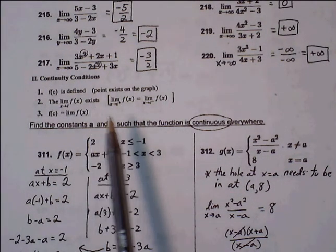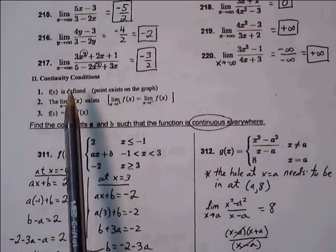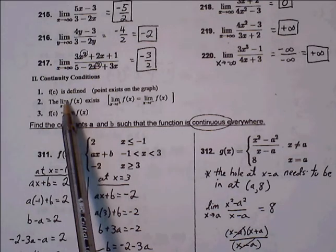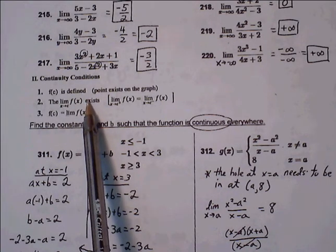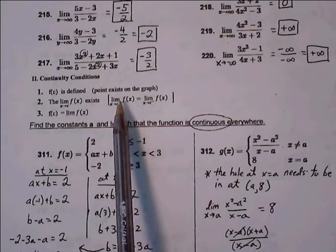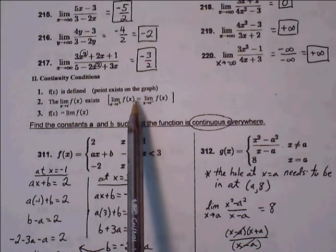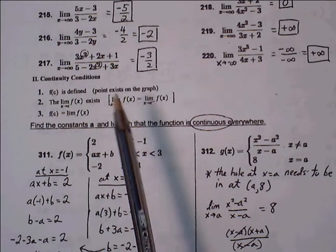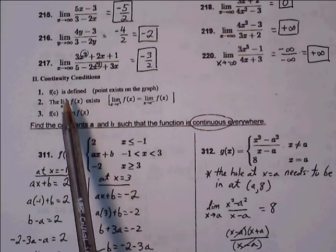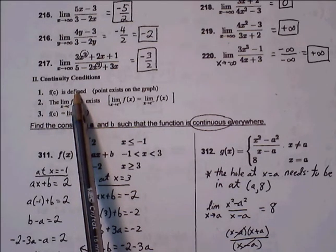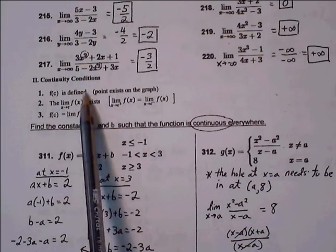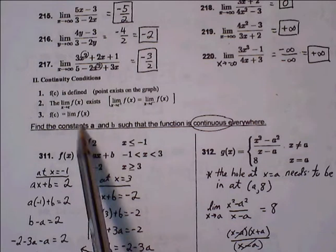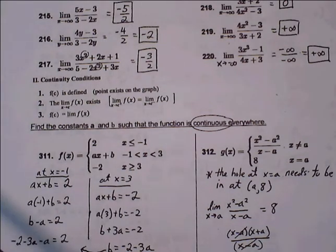Just to review continuity conditions: a function is continuous if, first, the ordered pair is defined. Second, the limit has to exist — if the function is split between two branches, we test one-sided limits and confirm they equal each other. Third, we compare the results of the first two conditions: if the y value equals the limit value, the third condition passes, and if all three conditions pass, the function is continuous at that point.